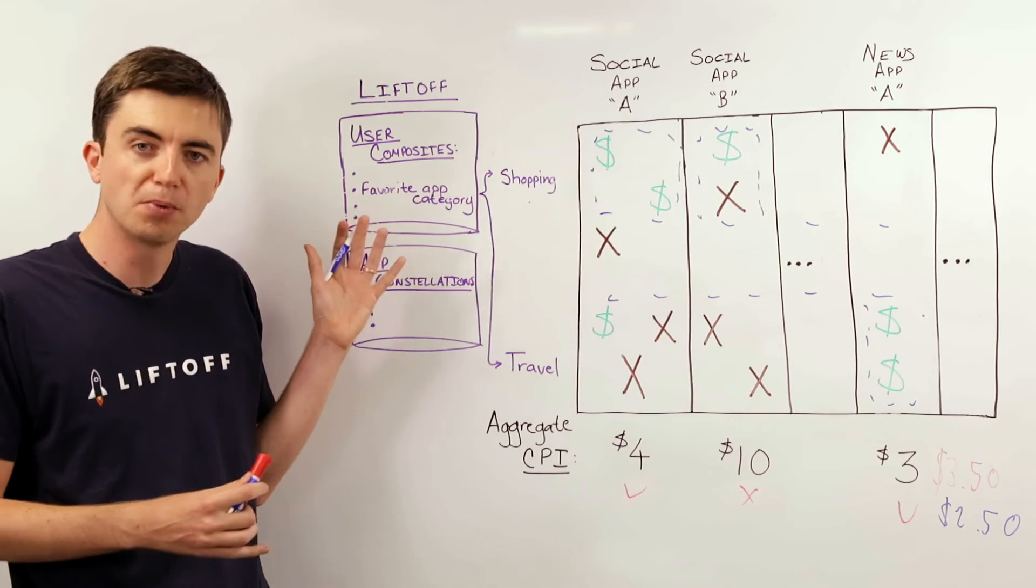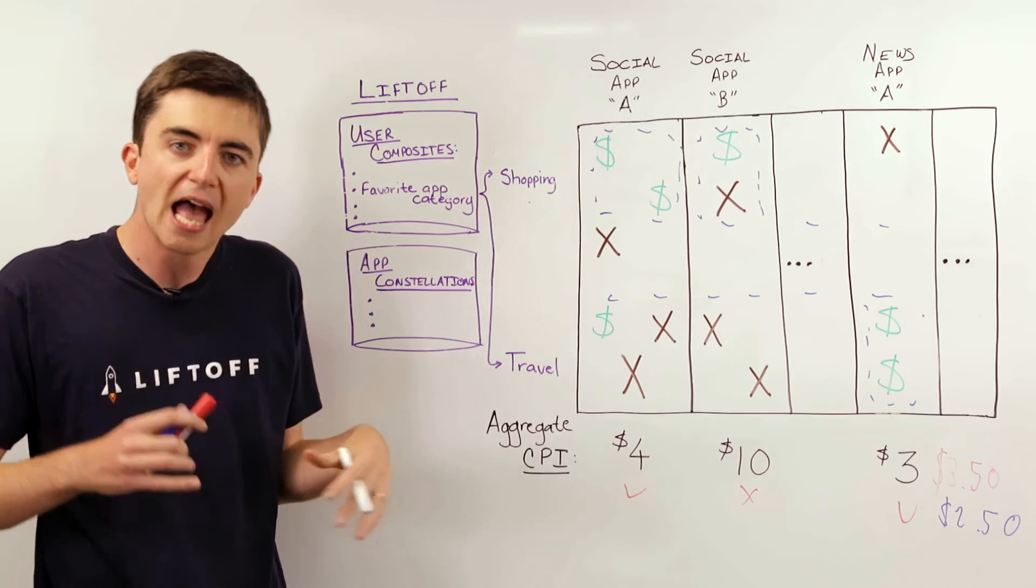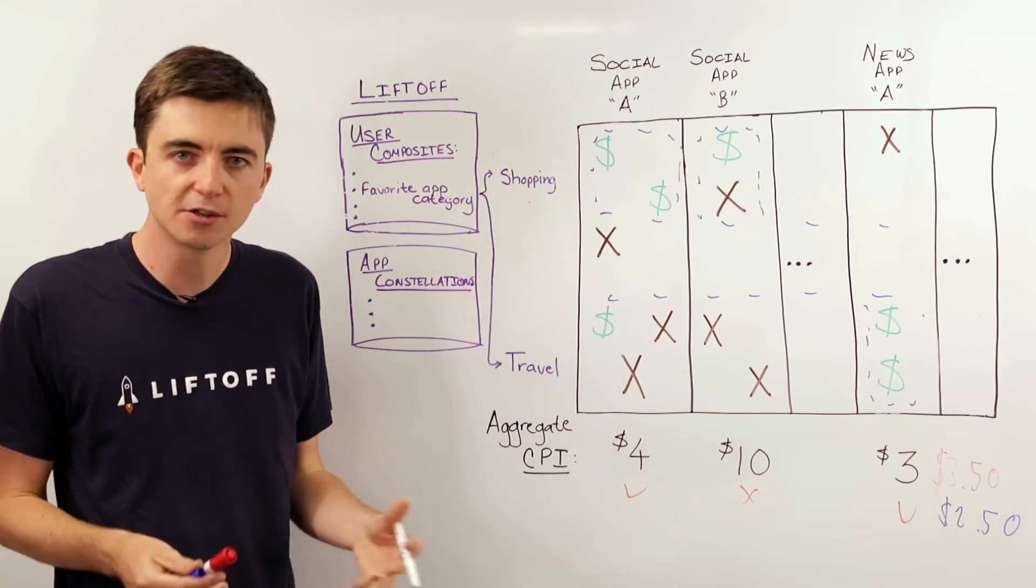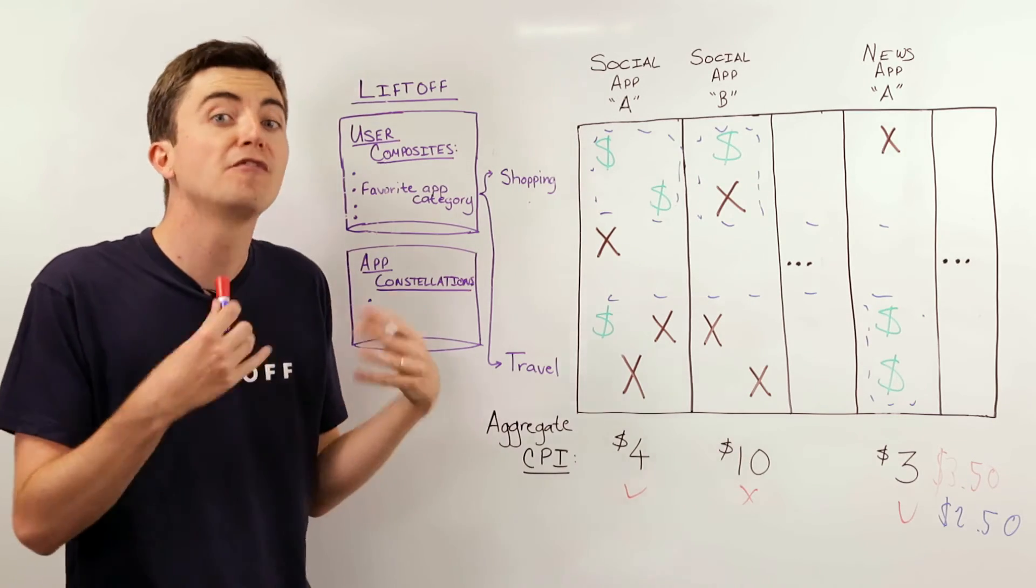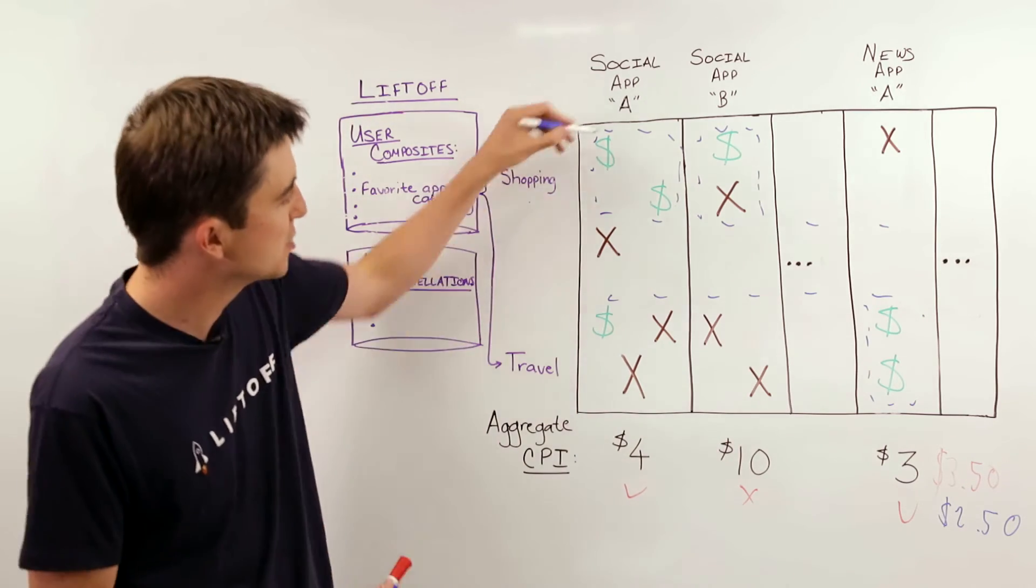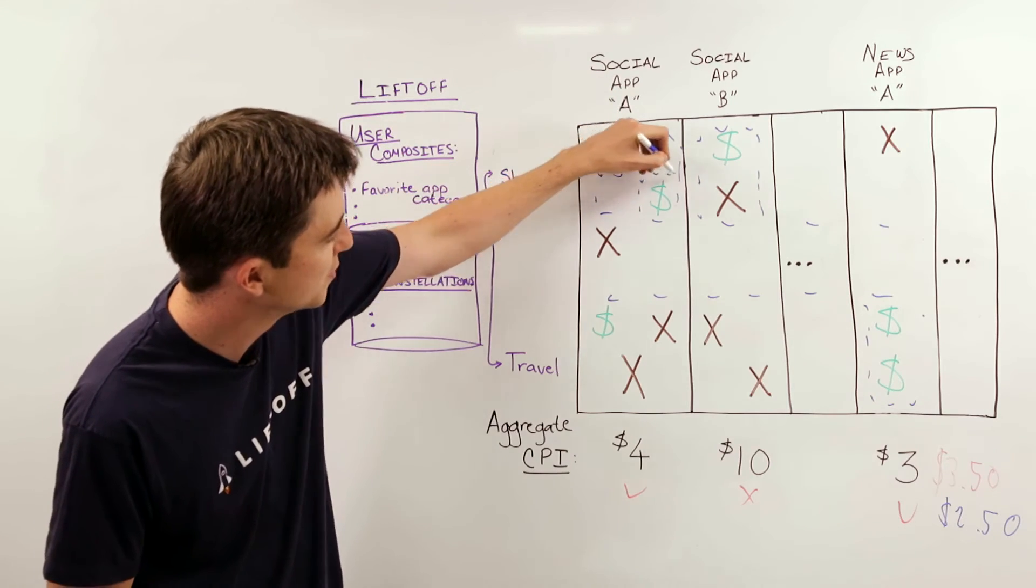And because each user composite contains around 200 different signals, as our systems collect more and more data about your campaigns, we can hone in further and further, driving better and better CPIs by targeting more and more granular subgroups of users.